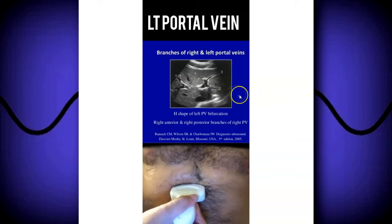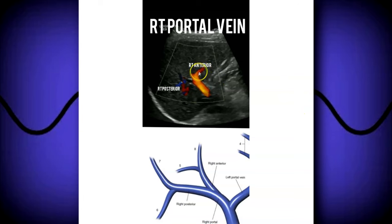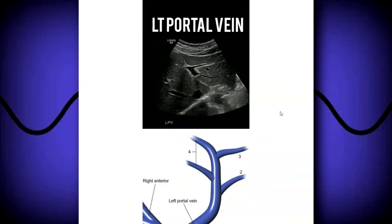The main portal vein bifurcates into right and left portal veins. The left portal vein has branches corresponding to liver segments 2, 3, and 4. The right portal vein bifurcates into right anterior (segments 8 and 5) and right posterior (segments 7 and 6). Note that in some views the right posterior branch flow may appear to go away from the liver and below baseline on Doppler — this is normal and not considered hepatofugal; it simply reflects flow direction relative to the transducer.